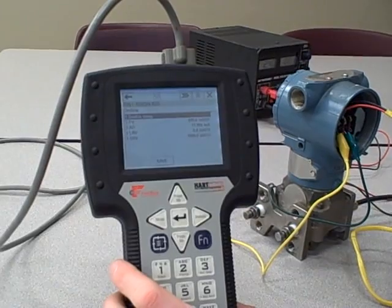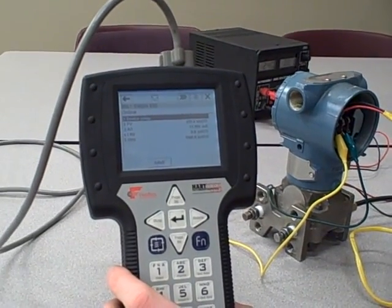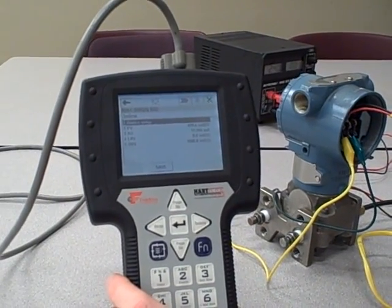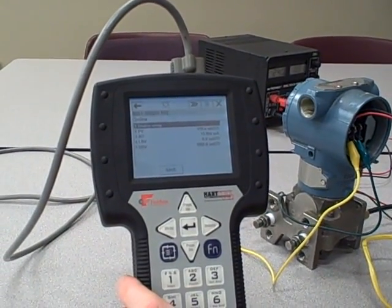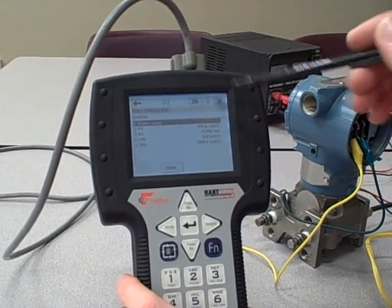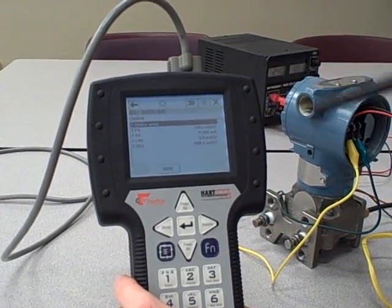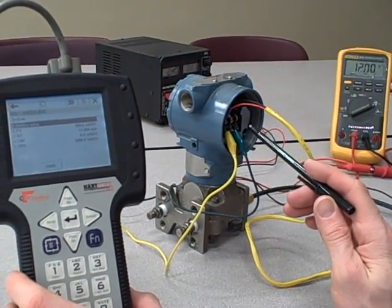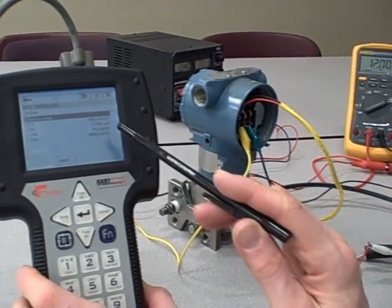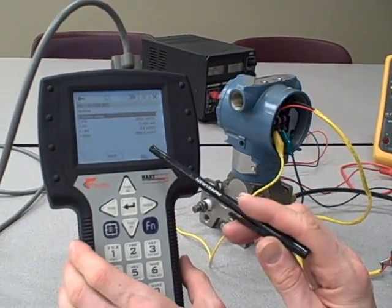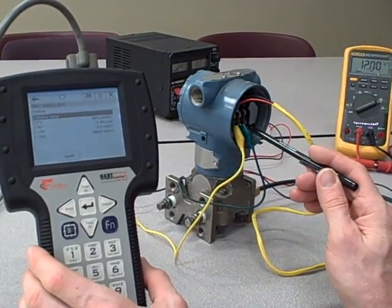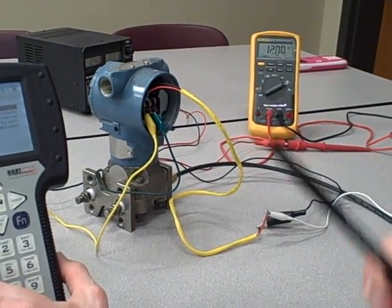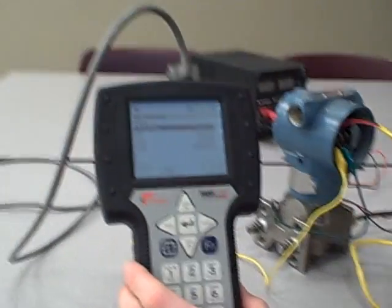So many features, options, and parameters are accessible using one of these HART Communicators. It's a world of options, far beyond what we ever had with old analog-only devices. But remember, this communicates using pulses of AC voltage and current, superimposed on the same two wires that the DC 4 to 20 milliamp signal goes through. I can attach this communicator to the transmitter directly in parallel, or anywhere in parallel along the signal cable leading back to the power source.